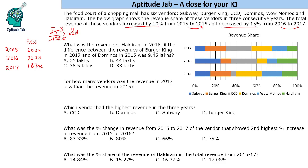The first question asks: what was the revenue of Haldiram in 2016, given that the difference between the revenues of Burger King in 2017 and Domino's in 2015 was 9.45 lakhs? Burger King is the orange one and Domino's is the yellow one. Burger King in 2017 goes from 10 to 30, so it has a 20% share. Domino's in 2015 goes from 40 to 65, so it has a 25% share.